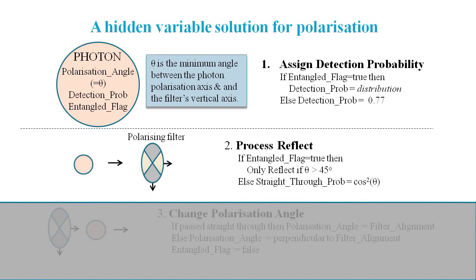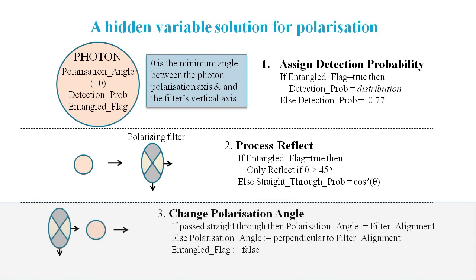The logic that determines if the photon goes straight through to the one detector, or is reflected down to the zero detector, is also different if the photon is entangled. Finally, a new value is assigned to the polarization angle, and the entangled flag is reset.